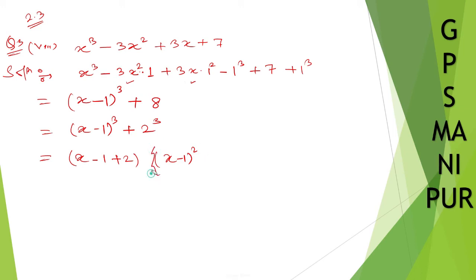Times a square, that is x minus 1 whole square, minus a b, that is 2 times x minus 1, plus b square.